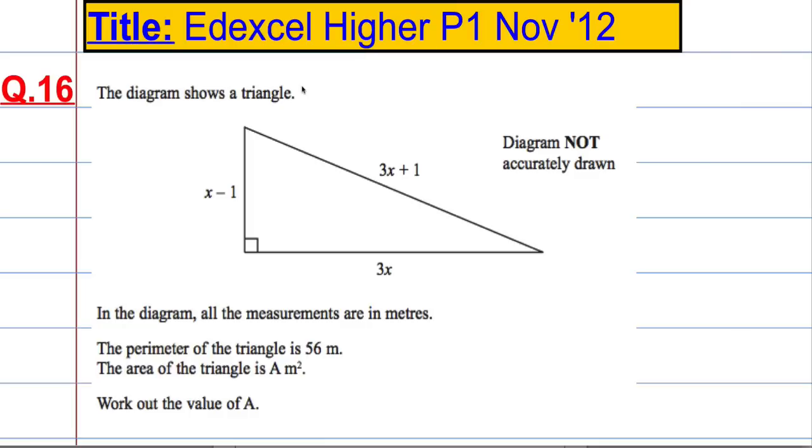Okay, question 16. This looks like it could be fun. The diagram shows a triangle. It's not drawn accurately. In the diagram, all measurements are in metres. The perimeter of the triangle is 56 metres. It says the area of the triangle is A metres squared. Work out the value of A.